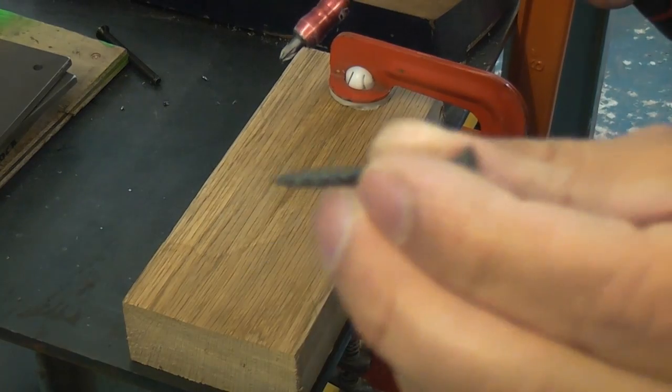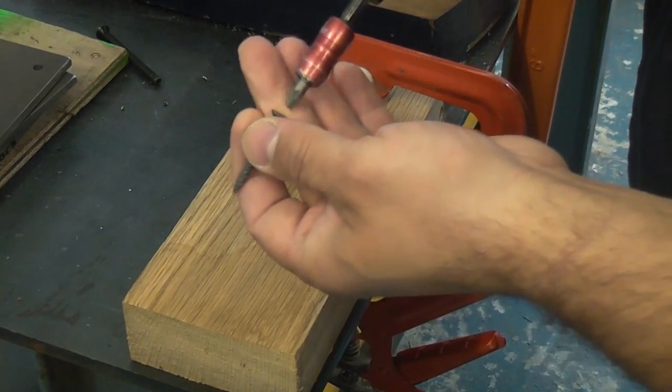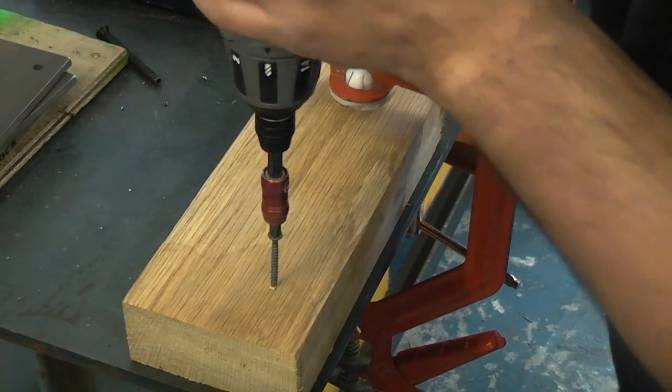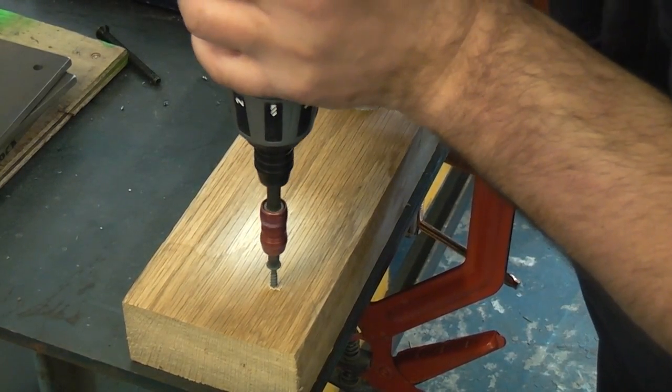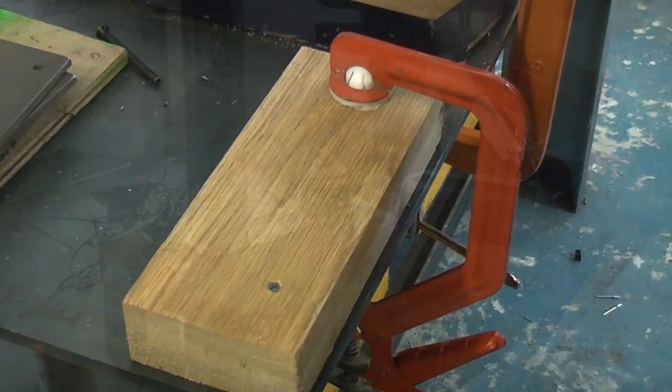Here we have a block of oak and there we have a self-countersinking screw. If we drive this into the block of oak you will see that it self countersinks, and that is flush with the surface.